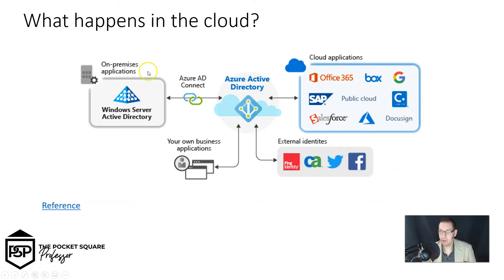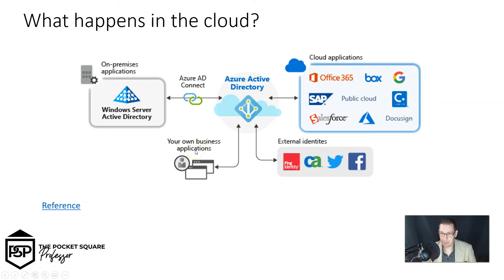We have on-premise applications done through an Azure Application Proxy. That takes whatever on-premise custom server you have, processes that request, and shoots it up to Azure Active Directory. Your own business applications — custom ones, CRM systems, whatever you have on-premise — we can publish those through the App Proxy as well.